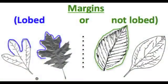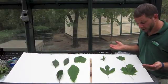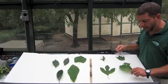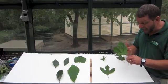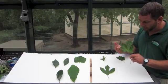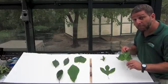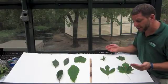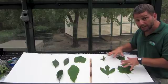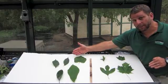Margins can be lobed or not lobed. All leaves have margins. The margin is the edge of the leaf, or the edge of the leaf's blade. Everything we talk about now is only about the margin or edge. Leaf margins can either be lobed, like the leaves close to me, or not lobed, like the leaves farther away.